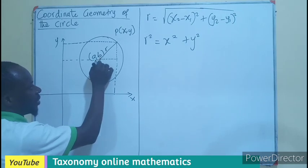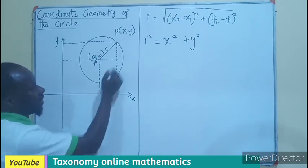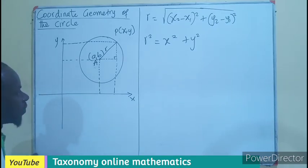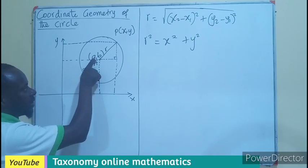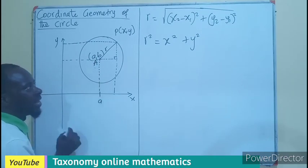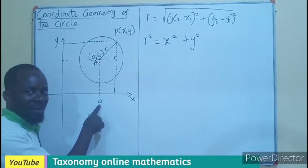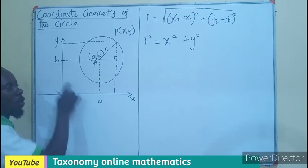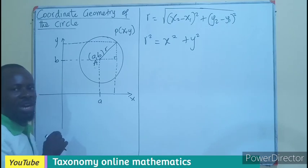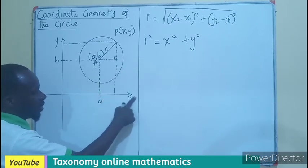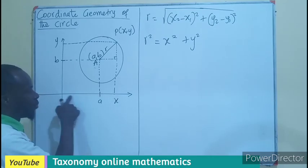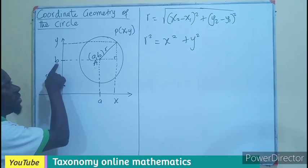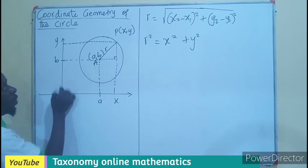Dropping a perpendicular from P to the X axis forms a right angle, giving a right-angle triangle. The horizontal distance from the origin to the foot of the perpendicular is a — the x-coordinate of the center. Any point further along the X axis up to below P has value x, and the vertical distance from the origin up to the center's height is b — the y-coordinate of the center.